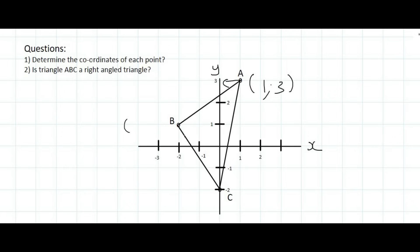If we look at B, its x value is minus 2, right? And its y value is 1. If we look at C, its x value is 0, because it hasn't moved left or right, and its y value is minus 2.